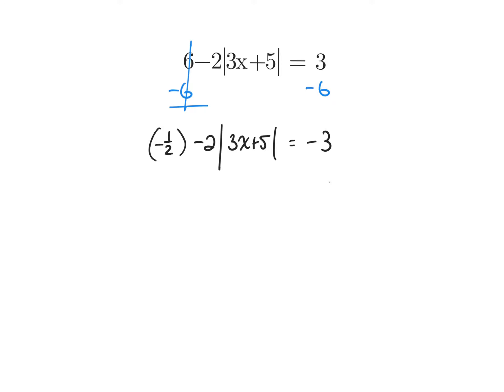What is a negative times a negative? Positive. What's one-half times 2? 1. So I have one times the absolute value of 3x plus 5. Just be careful — what you do to one side of an equation you must do to the other. Negative one-half times negative 3: a negative times a negative is positive.